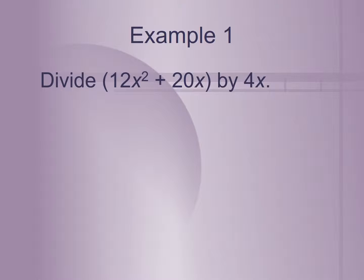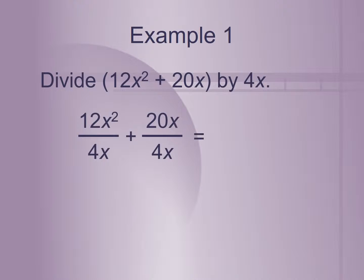Let's divide 12x squared plus 20x by 4x. Since we're dividing a polynomial by a monomial, we divide each term by 4x: 12x squared divided by 4x, and 20x divided by 4x. 4 goes into 12 three times, and x squared over x is just x. Plus, 4 goes into 20 five times, and the x's cancel completely, leaving the answer 3x plus 5.